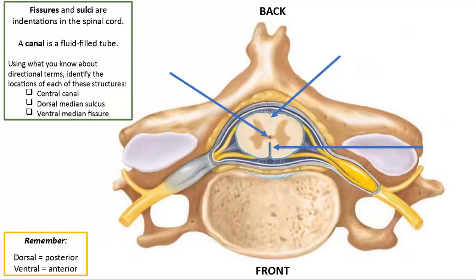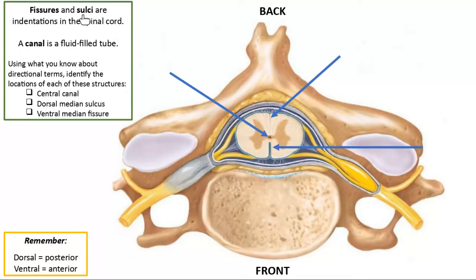Using dorsal and ventral to describe the indentations of the spinal cord: like the brain has gyri (bumps) and sulci (indentations), and the left and right halves divided by the longitudinal fissure, we see those same words in the spinal cord. We have the dorsal median sulcus and the ventral median fissure — both have the word median, meaning we're in the middle. Both are indentations.